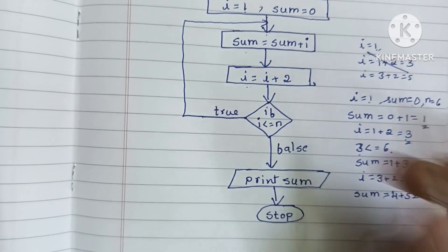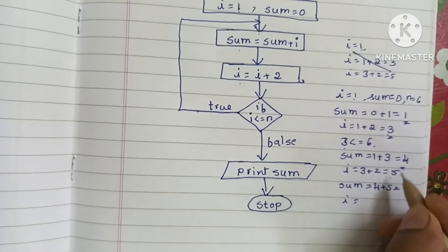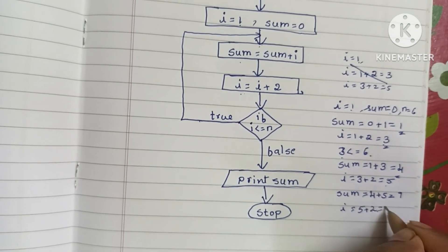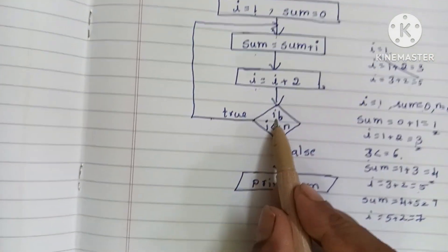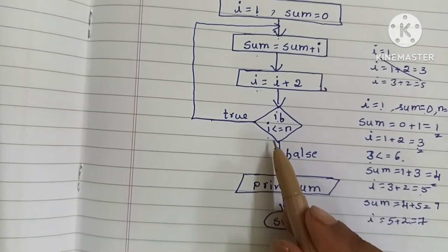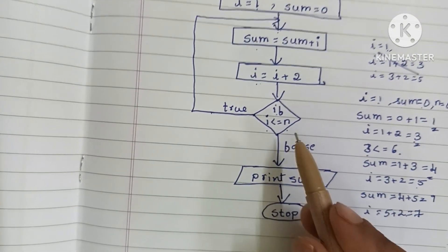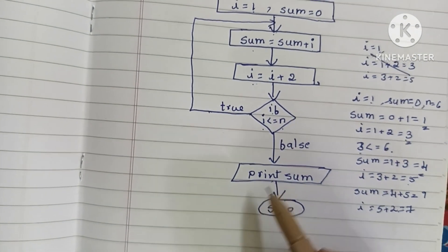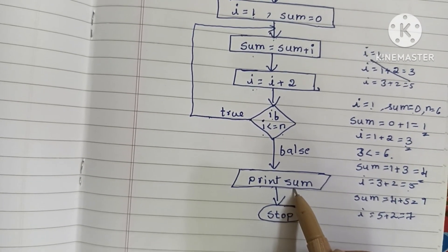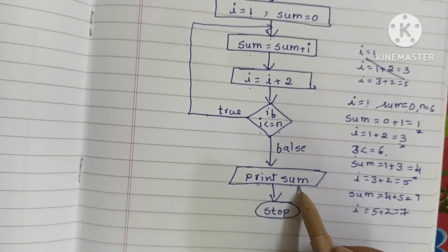Next, i = i + 2: i = 5 + 2 = 7. We check if i is less than or equal to N: i is 7, and 7 is not less than or equal to 6 — this is false. So we go to the output process and print the sum value.